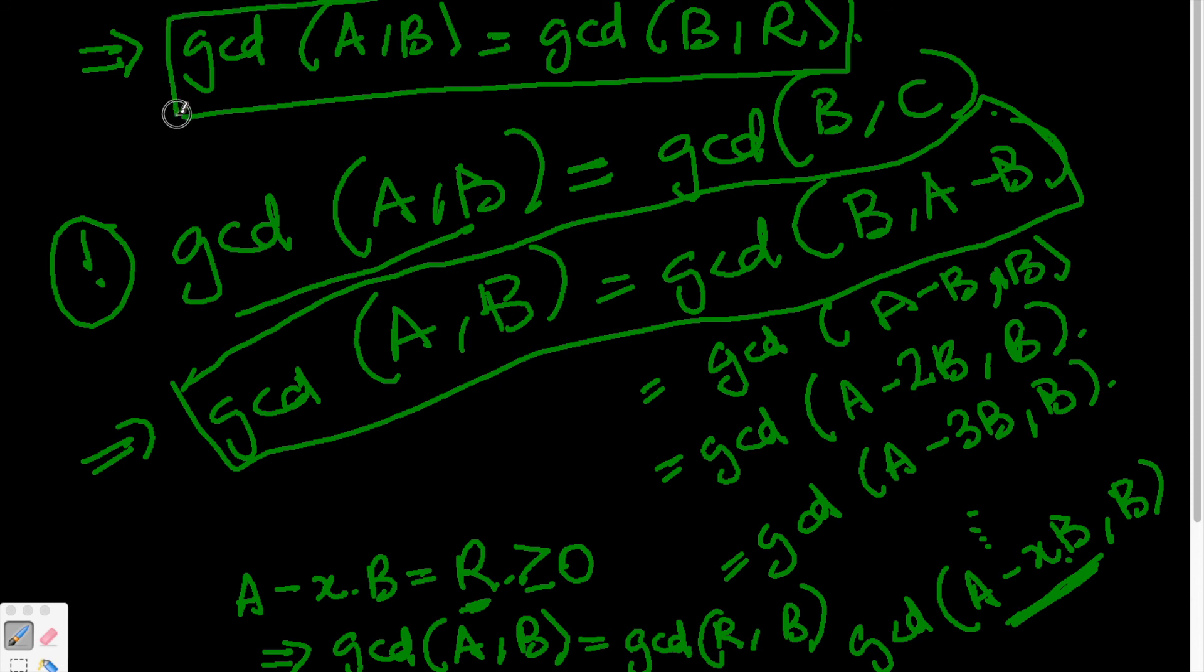Which is exactly what we are looking for. R is the remainder and we have Euclid's algorithm effectively proven to us.